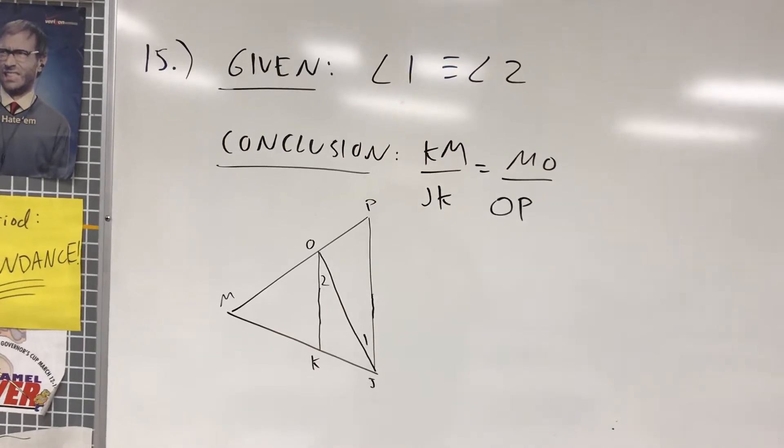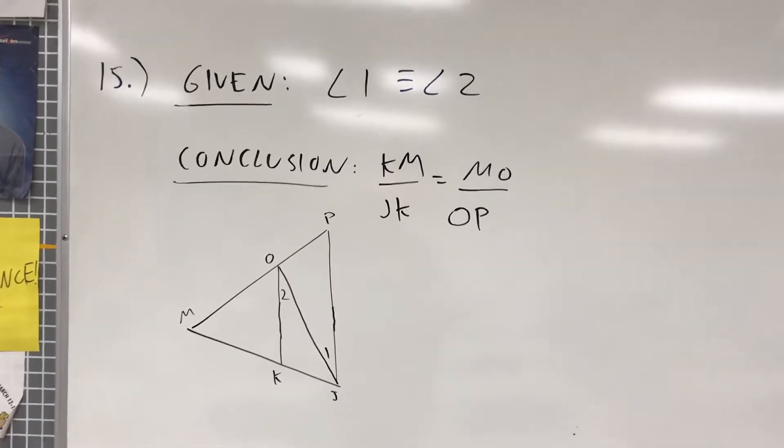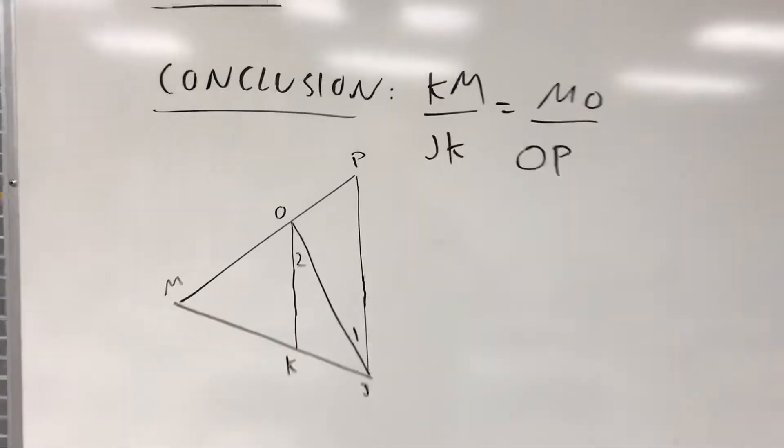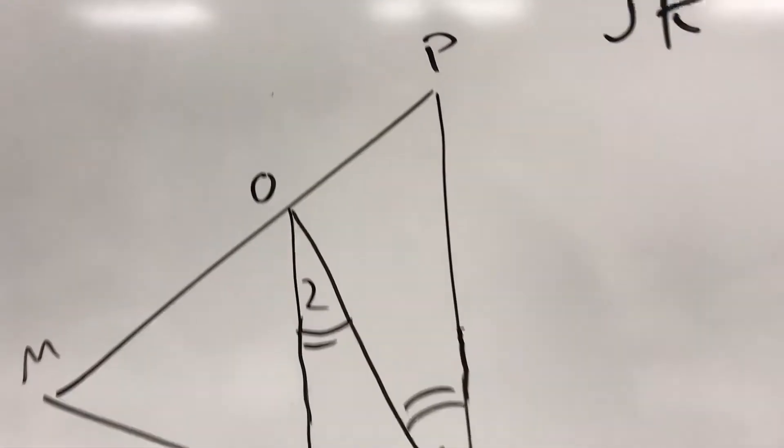All right, we're going to take a look at problem number 15 from section 8.5. You can kind of see the diagram here. They tell you that angle 1 and angle 2 are congruent. So let me go ahead and mark those two angles congruent there so you can see that.